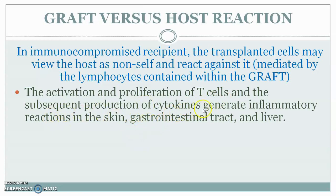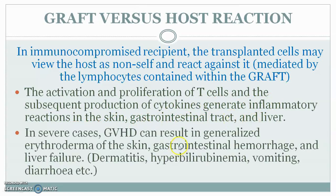In graft versus host reaction, activation and proliferation of T cells and subsequent production of cytokines generate inflammatory reactions in the skin, gastrointestinal tract, and liver. Immunocompetent T cells present in the graft mount immunity against host antigens, causing dermatitis in the skin, hyperbilirubinemia when the liver is affected, and vomiting and diarrhea when the gastrointestinal tract is affected.